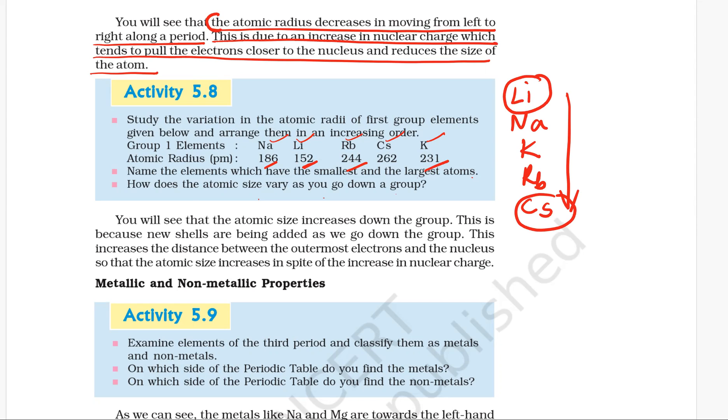How does atomic size vary as we go down the group? As we go down the group, atomic size increases as the number of inner field shells also increases. So as the number of shells increases, therefore atomic size increases.